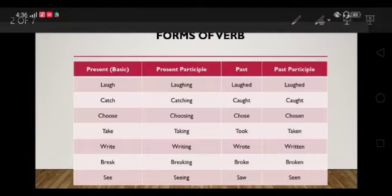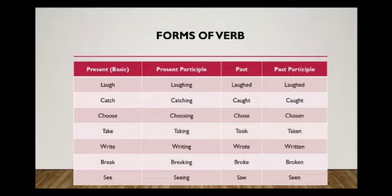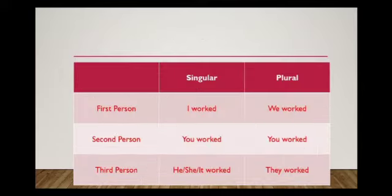As you can see the table, I have drawn it to show that we use the same form of the verb with all persons in simple past tense. So: I worked, we worked, you worked, he worked, she worked, it worked, and they worked.